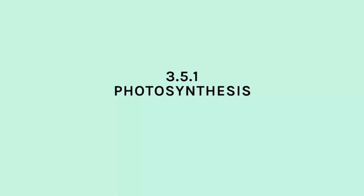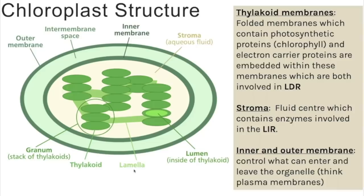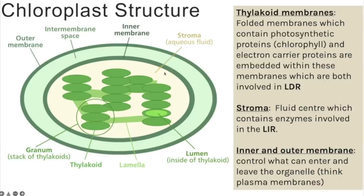First, with photosynthesis, you need to know where it occurs — a mini recap on chloroplast structure, because you need to know where each stage of photosynthesis happens. The thylakoid membrane has folded membranes with proteins embedded for the electron carrier chain and ATP synthase, and that is where the light dependent reactions occur. A stack of thylakoids is called a granum. The fluid in the centre is the stroma where the light independent reactions happen, with lots of enzymes. The inner and outer membranes control what can enter and exit.